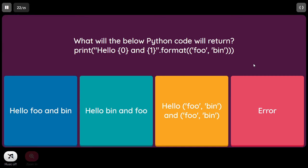What will the below Python code return? 'hello {0} and {1}'.format(('foo', 'bin')). We need to observe carefully — 'foo', 'bin' is given inside parentheses, which represents a tuple. We are passing only one tuple as the argument, which maps to placeholder {0}. The value for placeholder {1} is missing. So it will result in an error.